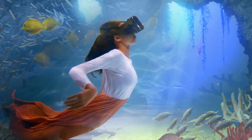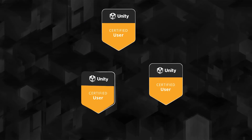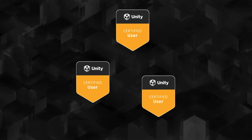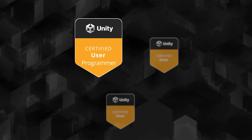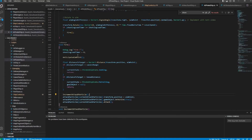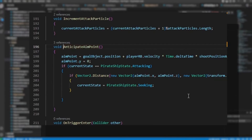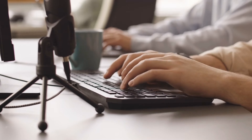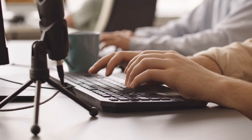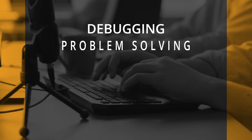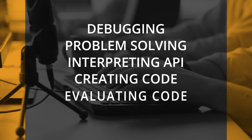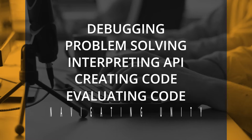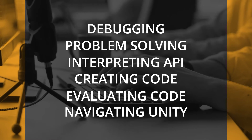The UCU program is comprised of three separate certification exams. The UCU Programmer Certification covers the basics of C Sharp programming within Unity software to create interactivity. This certification demonstrates entry-level knowledge that includes debugging, problem-solving, interpreting the API, creating and evaluating code, and navigating the Unity interface.